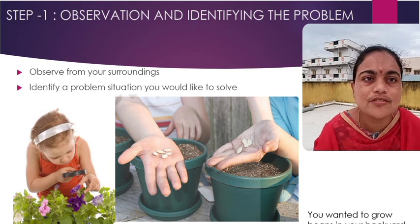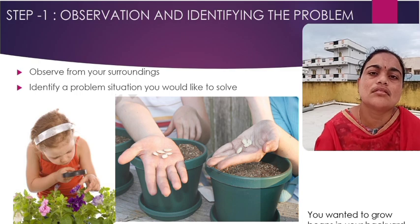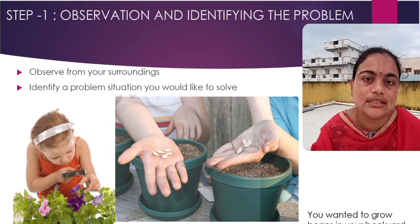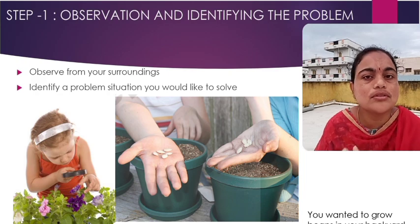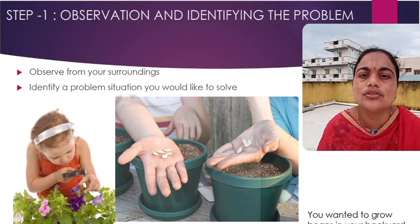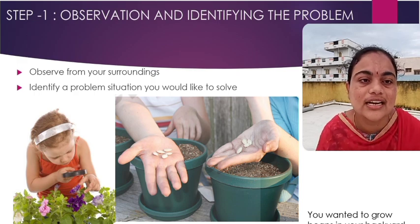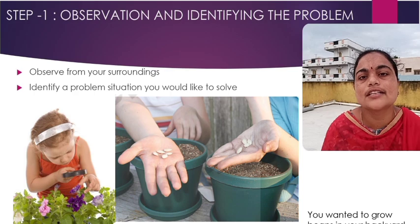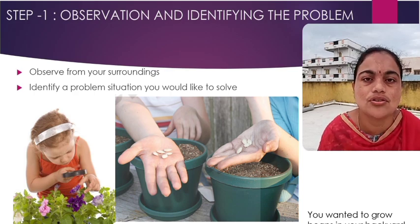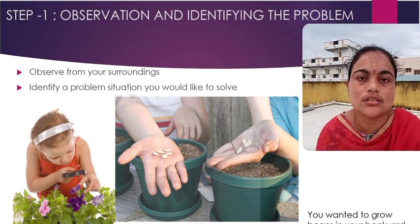The first step is observation and identifying the problem. Observation plays a key role in the scientific method. You have to observe your surroundings keenly so you can identify a problem to solve using the scientific method. For example, in this case you wanted to grow some beans in your backyard — how will you solve this?